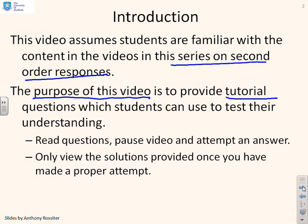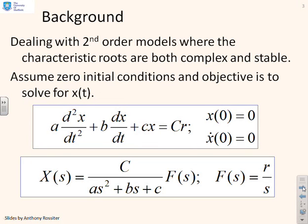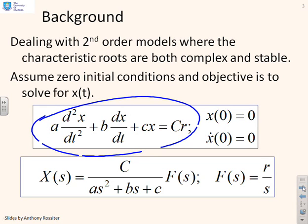For this to work, you need to read the questions and then pause the video and attempt answers before you view the solutions that have been provided. Now a bit of background: we're talking about second-order systems of this form. A d²x/dt² + b dx/dt + cx = cr. We're going to assume zero initial conditions because non-zero initial conditions simply complicate the algebra without really adding to the insight.